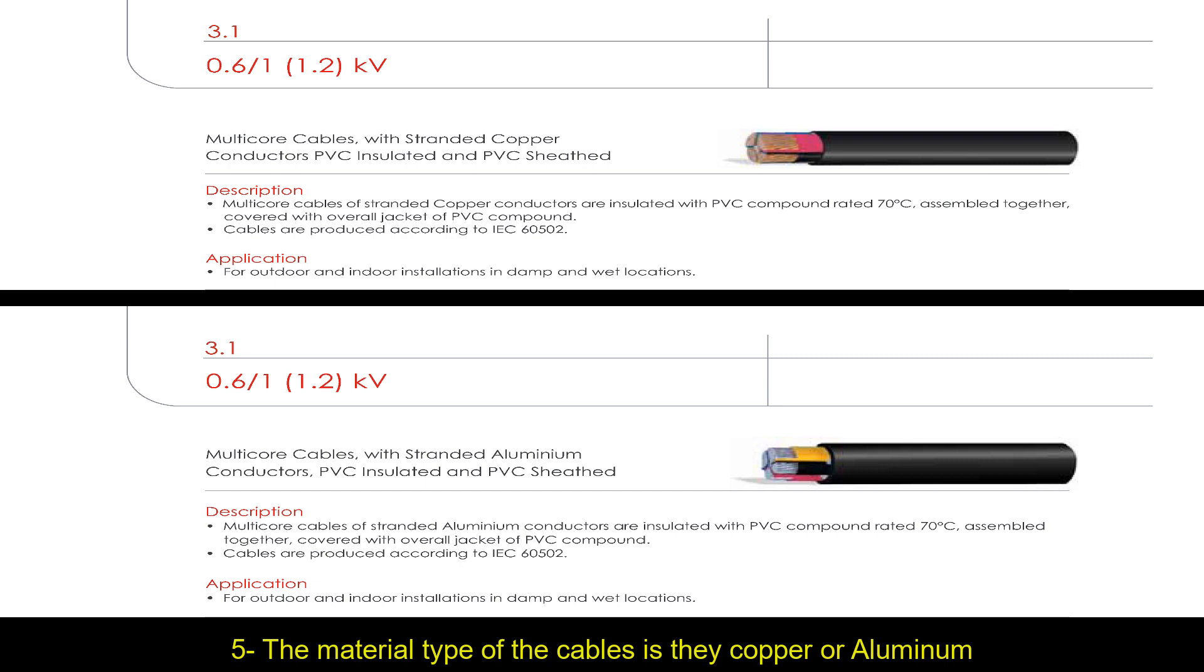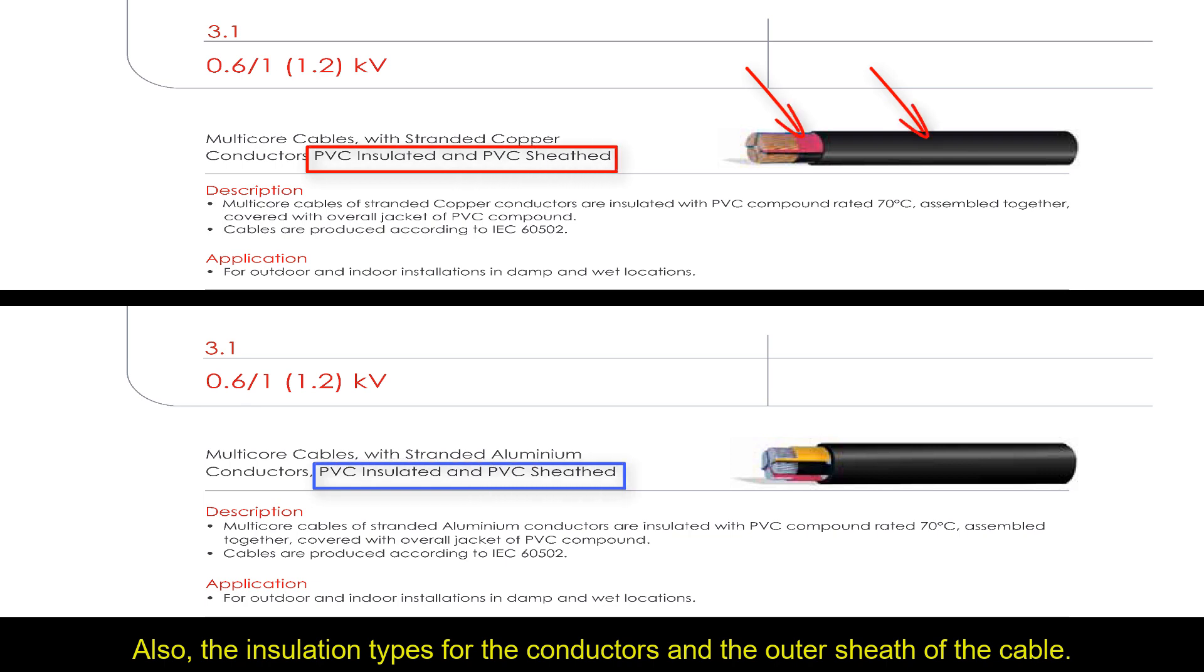Fifth, the material type of the cables and the cover of aluminum. Also, the insulation types for the conductors and their outer sheets of the cable.